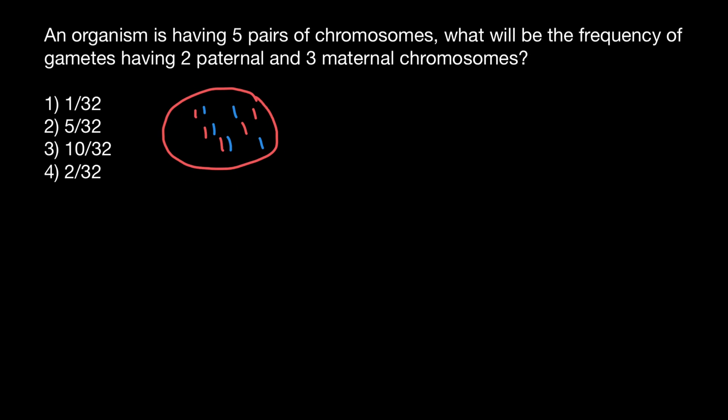If it is male, then gametes would be sperm. If this is female, then gametes would be egg cells. Let's say this is going to be a female diploid organism. This diploid organism can produce different variants of gametes. Gametes are going to be haploid, and for each pair of chromosomes, the gamete would inherit only one of the two — so it can be either the maternal or paternal chromosome.